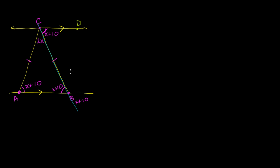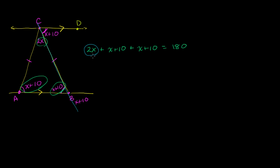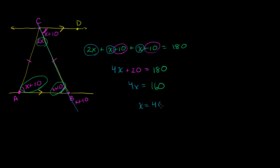When we take their sum, they need to equal 180 degrees, and then we can solve for x. So we get 2x plus x plus 10 plus x plus 10 is going to be equal to 180 degrees. Adding up the x's: 2x plus x plus x gives us 4x, and 10 plus 10 gives us plus 20. So 4x plus 20 equals 180. Subtract 20 from both sides: 4x equals 160. Divide both sides by 4, and we get x equals 40.